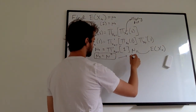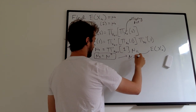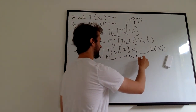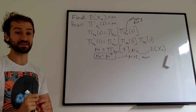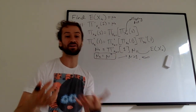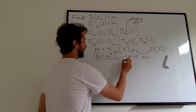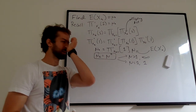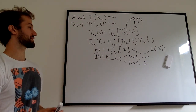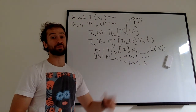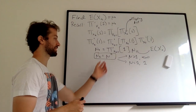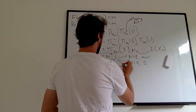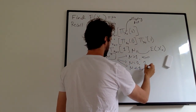If mu is greater than one, as t goes to infinity this expected value will go to infinity — it's expected to be huge, though it could still die out. When mu equals one, the expected value is just one at every time point. What's interesting is that even though the expected value at any single point is one, we know that if mu equals one the population will die out at some point with probability one — so that's an interesting tension.